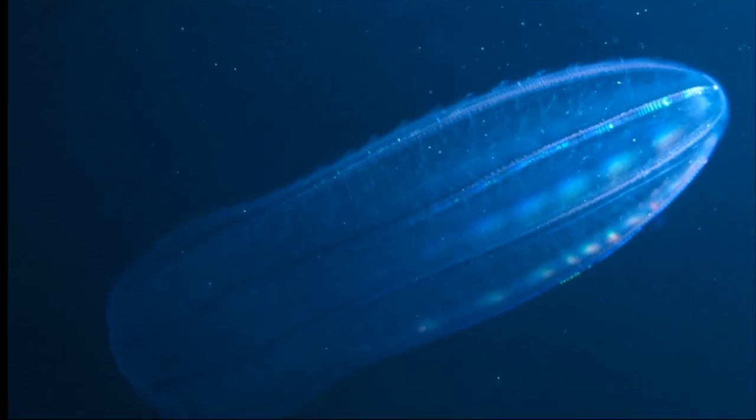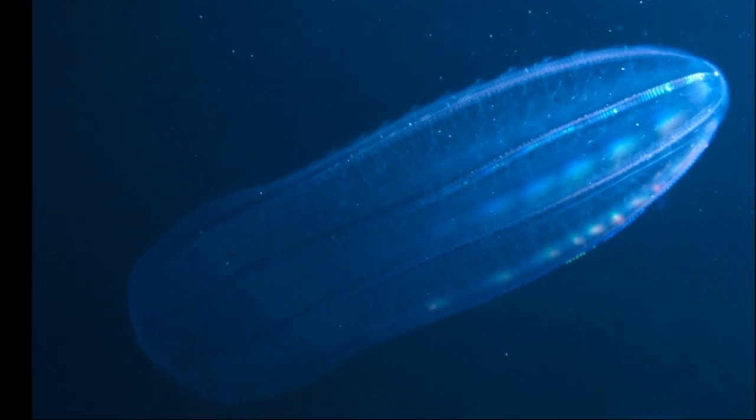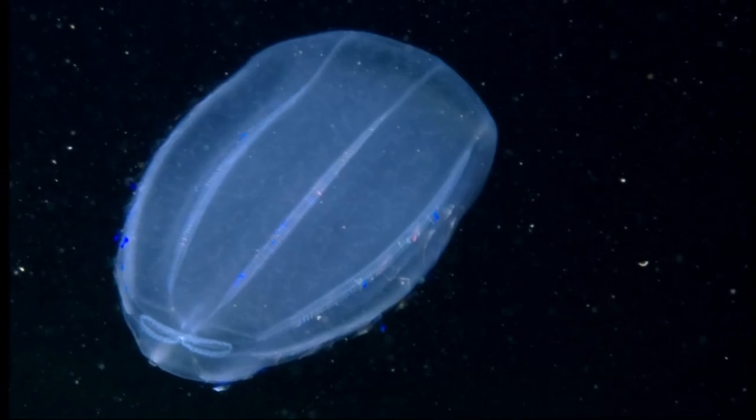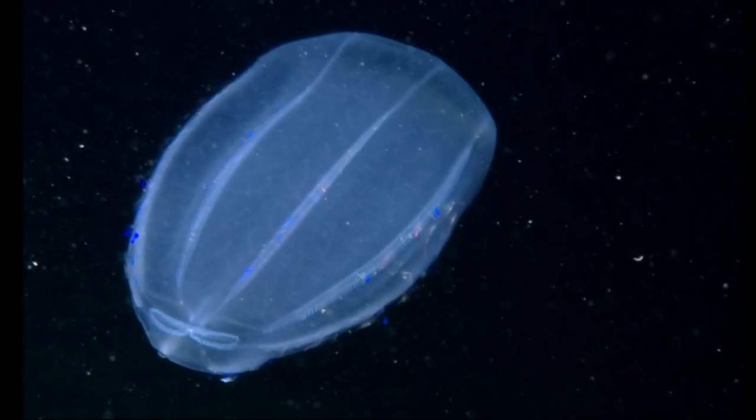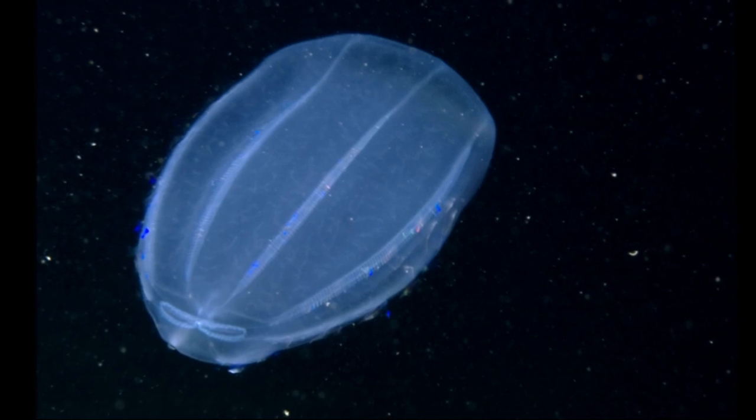They have a simple nervous system in the form of a nerve net, which is used to direct movement, feed, and hunt. There are eight rows of ciliary plates that run almost the entire length of the body.